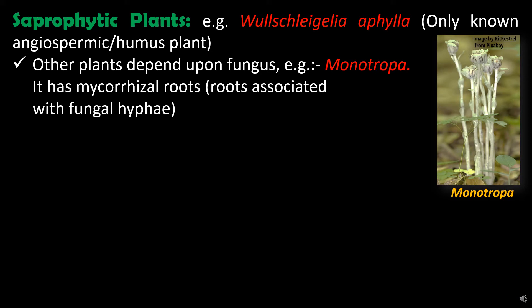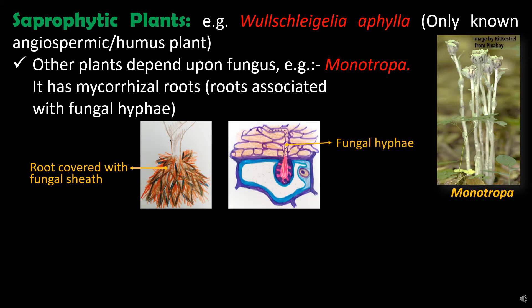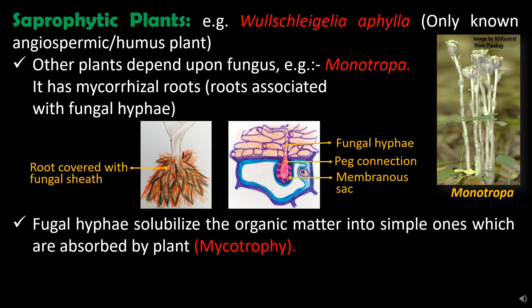Other plants depend upon fungus for their nutritional requirement — for example, Monotropa. Monotropa has mycorrhizal roots, meaning the roots are surrounded by a dense fungal sheath from which hyphae spread into the soil. Individual hyphae penetrate into the cortical cells and form a connection called a fungal peg or peg connection. These fungal pegs are not directly connected with the plant cells but make the connection through a permeable membranous sac. The cells of these fungal hyphae produce enzymes which break down complex organic materials into simpler ones and transfer them to the plant cell through these permeable sacs. Such nutrition, in which the plant utilizes fungal hyphae to draw nutrients from dead or living organisms, is called mycotrophy.